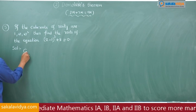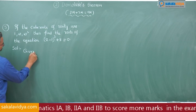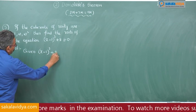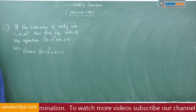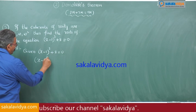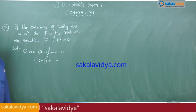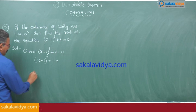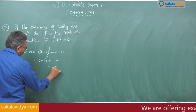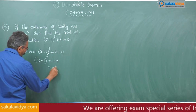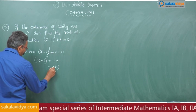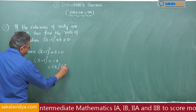Given (x-1)³ + 8 = 0, this can be written as (x-1)³ = -8. Now, -8 can be written as (-2)³, that is 2 cubed into minus 1, or simply (-2)³.